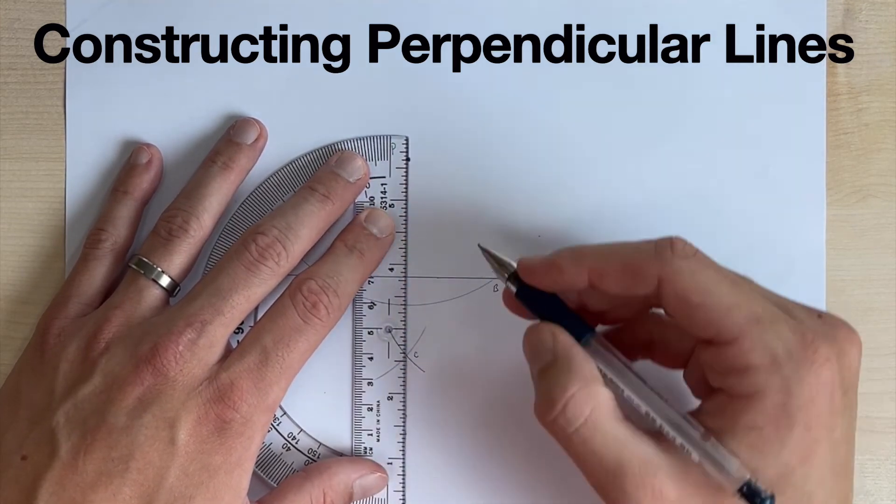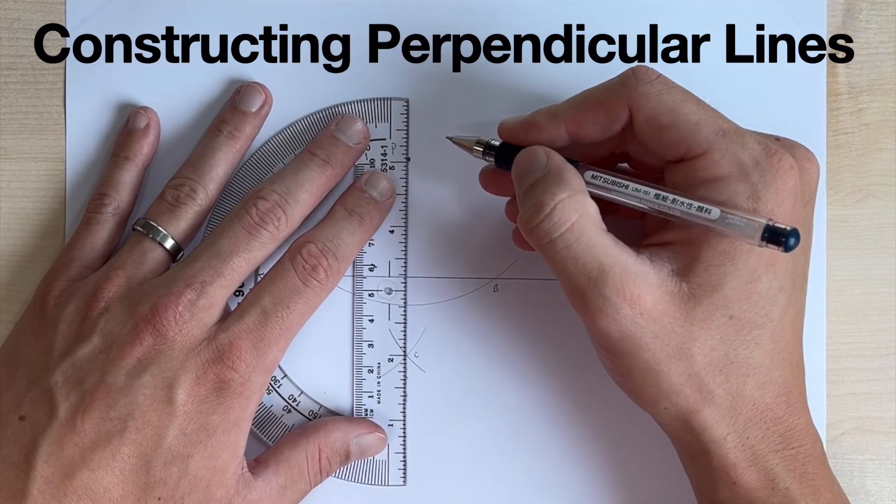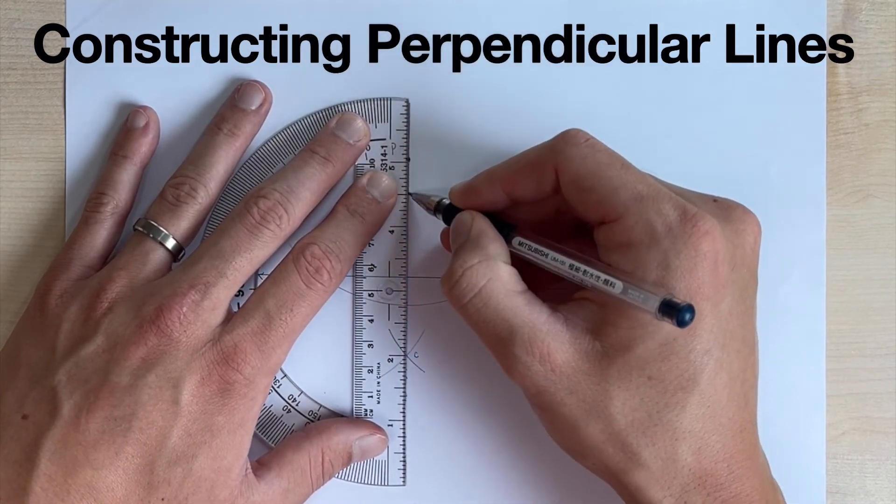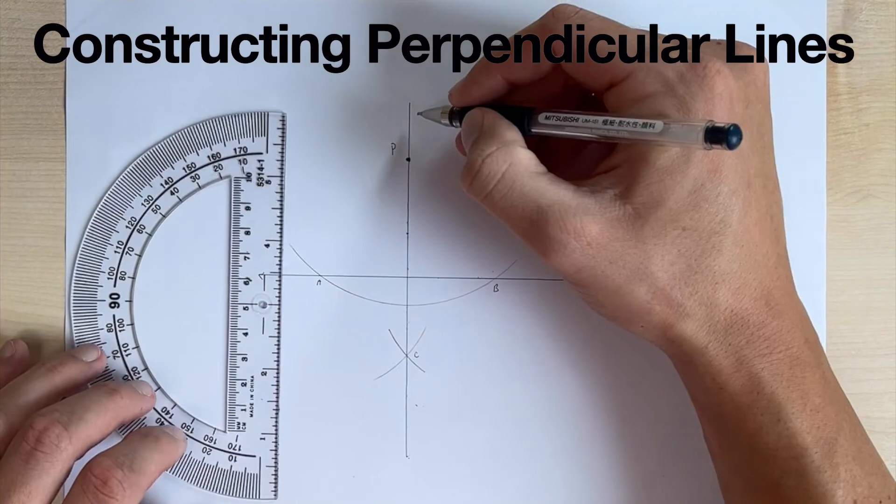Okay. So those should line up right on top of each other. And we're going to draw our perpendicular line just like that.